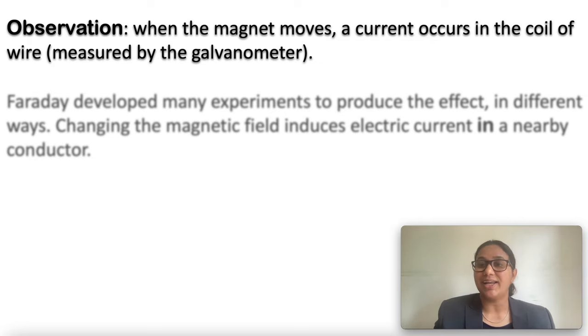What is your observation? When the magnet moves, a current occurs in the coil of wire, which is measured by the galvanometer.